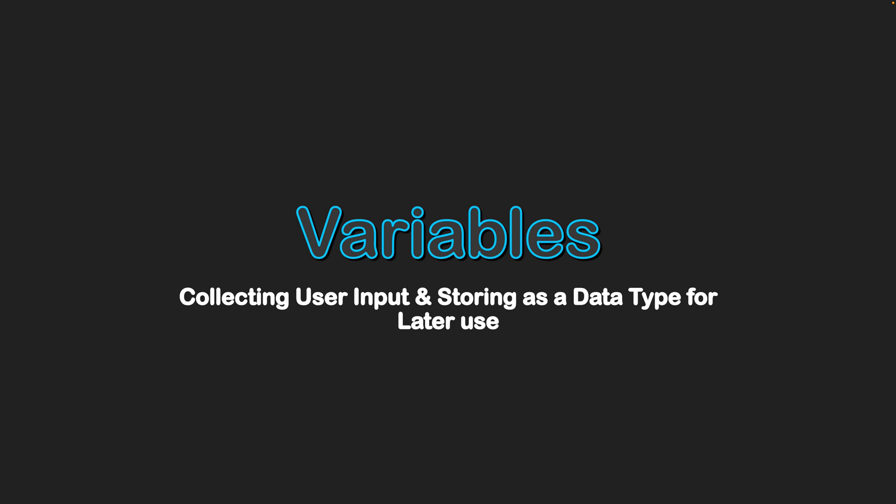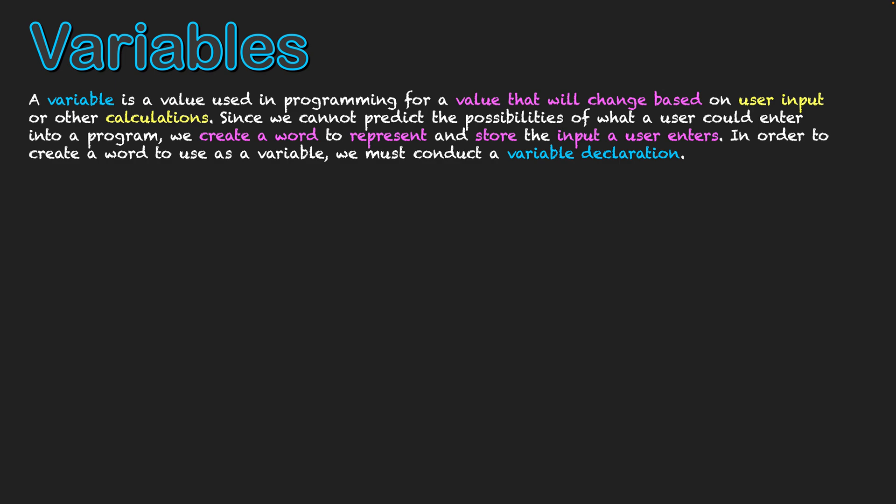Variables. Collecting user input and storing it as a data type for later use. A variable is a value used in programming for a value that will change based on user input or other calculations. Since we cannot predict the possibilities of what users could enter into a program, we create a word to represent and store the input that a user could possibly enter.